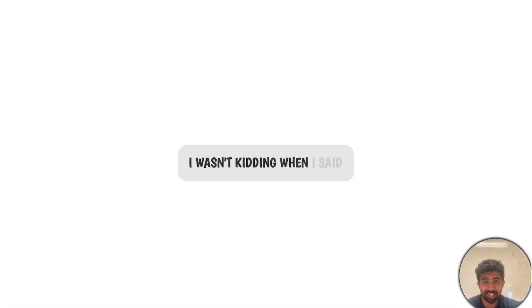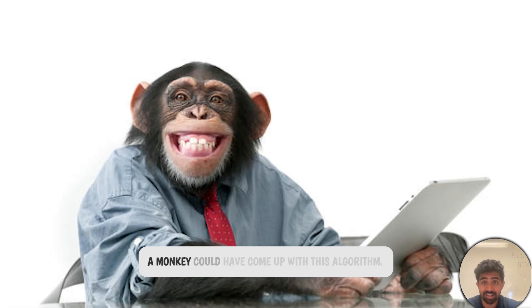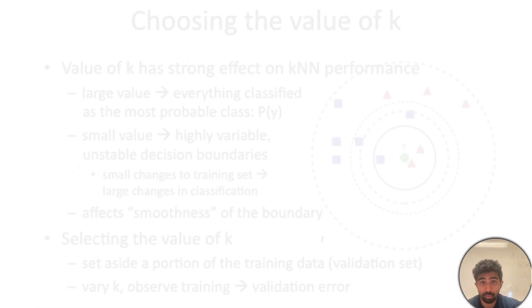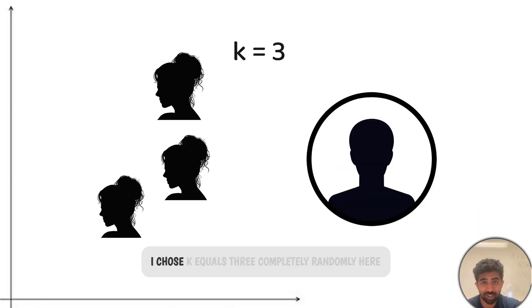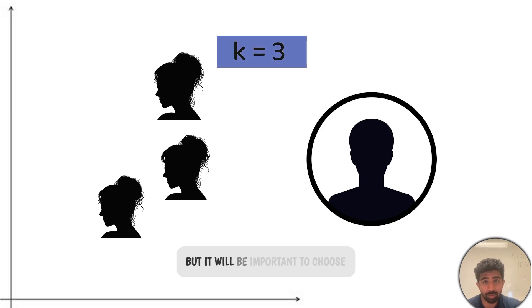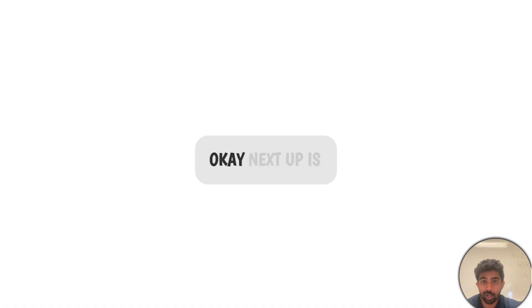I wasn't kidding when I said a monkey could have come up with this algorithm. But remember, choosing the right value of K is important and depends on your dataset. I chose K equals three completely randomly here, but it will be important to choose the right value of K in practice.